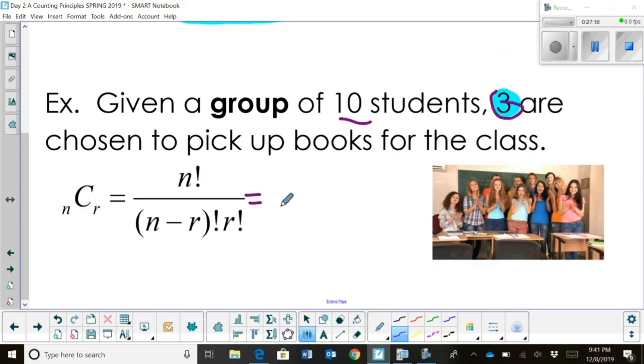So, this is going to be ten with a combination choosing three. So, in our formula, we're going to put ten factorial on top, and then on the bottom, we're going to take ten minus three factorial, all times another three factorial.